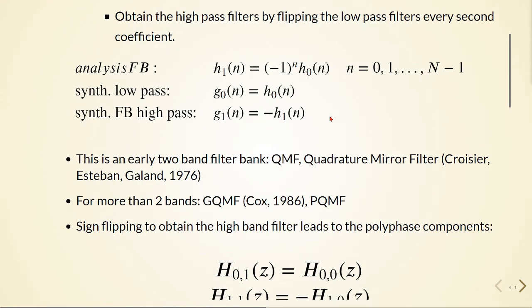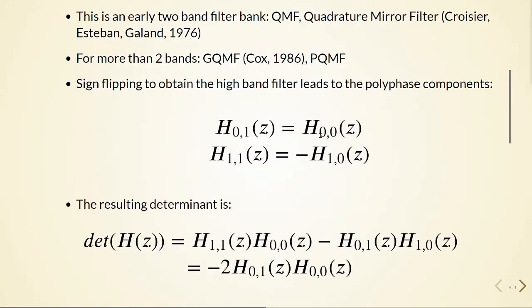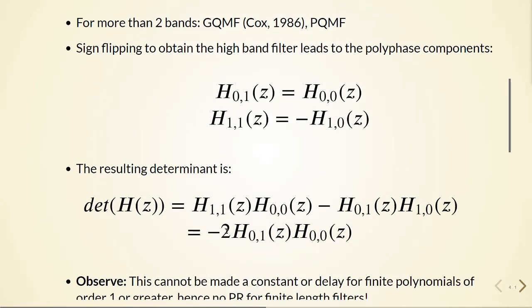So sign flipping to obtain the high-band filter leads to those polyphase components given here and the resulting determinant is given here, so it's minus two times h01(z) times h00(z).